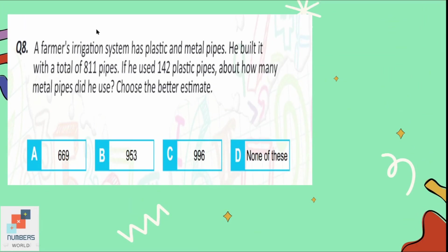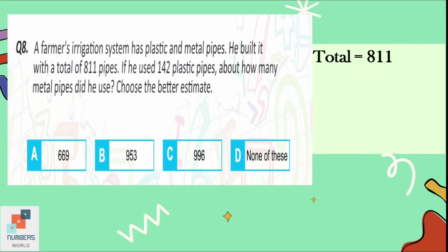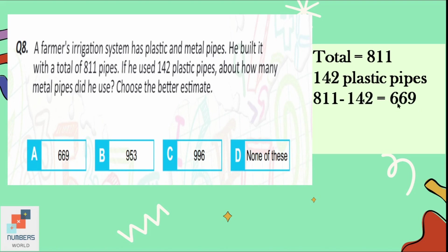Question number 8: a farmer's irrigation system has plastic and metal pipes, with a total of 811 pipes. If he used 142 plastic pipes, about how many metal pipes did he use? Subtracting the plastic pipes from the total: 811 − 142 = 669. Option A is correct. The farmer used 669 metal pipes to build his irrigation system.